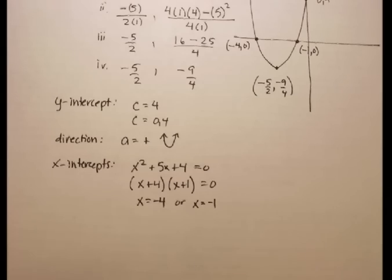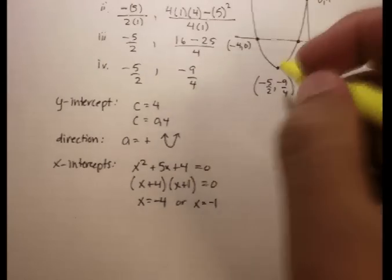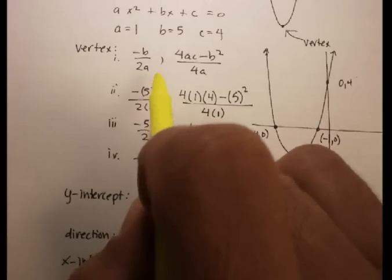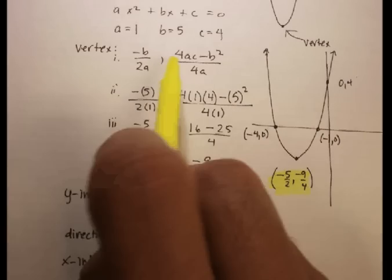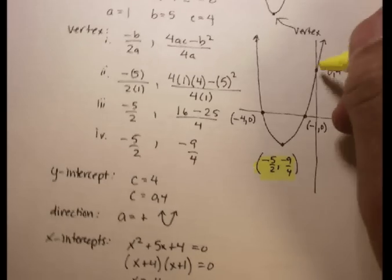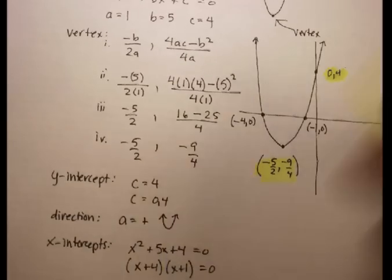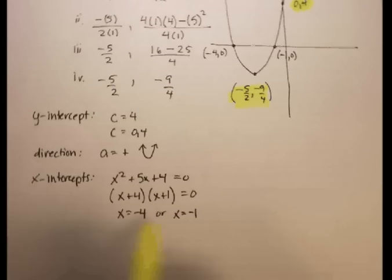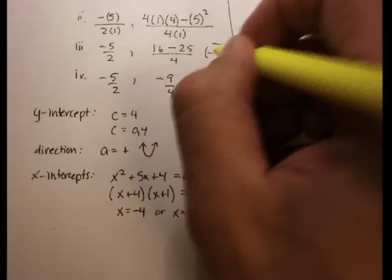So remember again, you need to find where the vertex is, and you can do that by the formula. Negative b over 2a, comma, 4ac minus b squared over 4a. You can find where the y-intercept is, and that's just by looking at the c value. You can find where the x-intercepts are, if you can factor your equation.